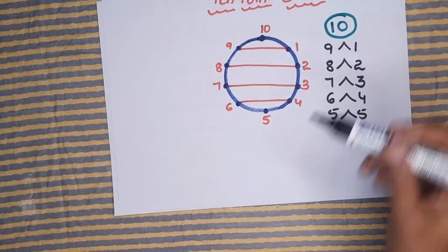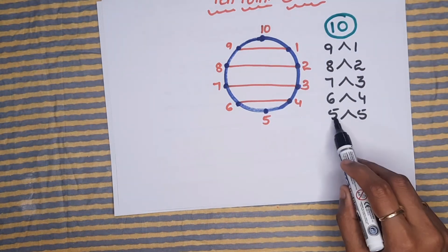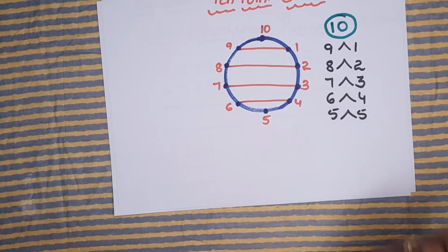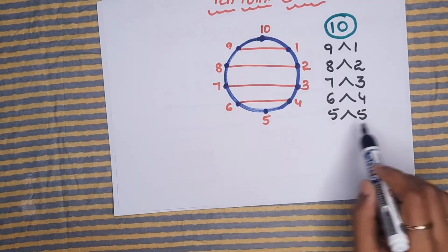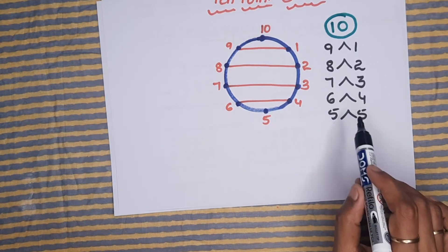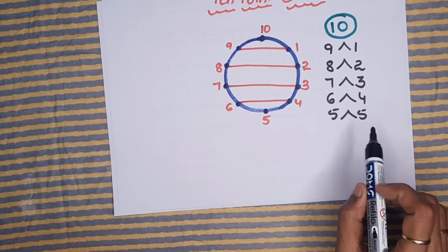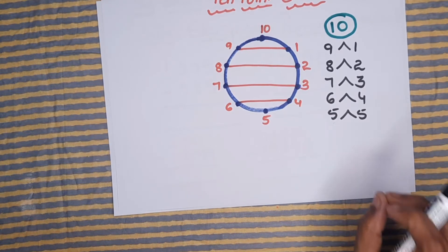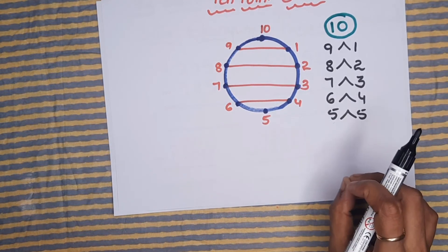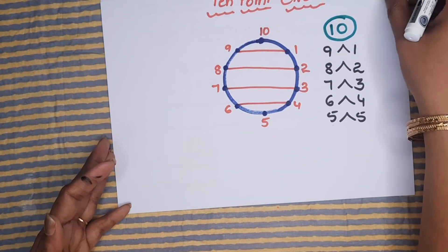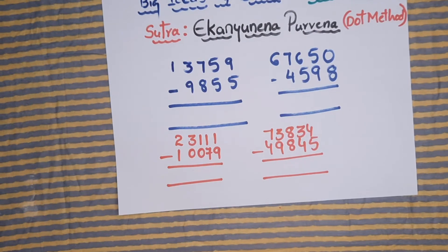These pairs cannot be separated. Whenever you see one of the friends in a pair, immediately the other one should strike in your mind. This 10-point circle is a very helpful and useful concept, especially in end terms, which play a big role in Vedic math — in multiplication, addition, and subtraction — everywhere this end term concept is applied.